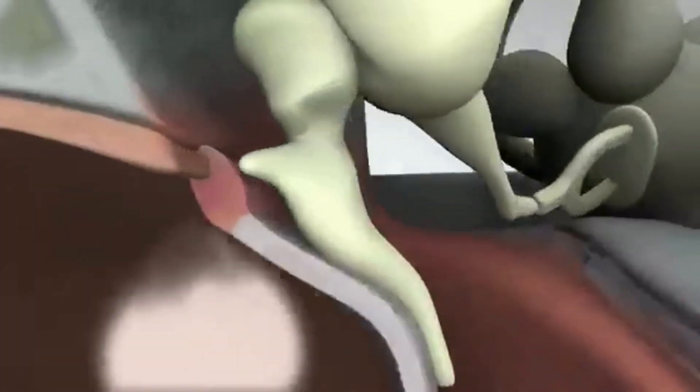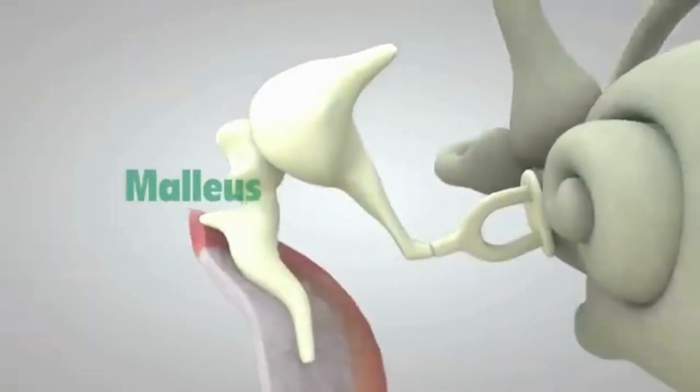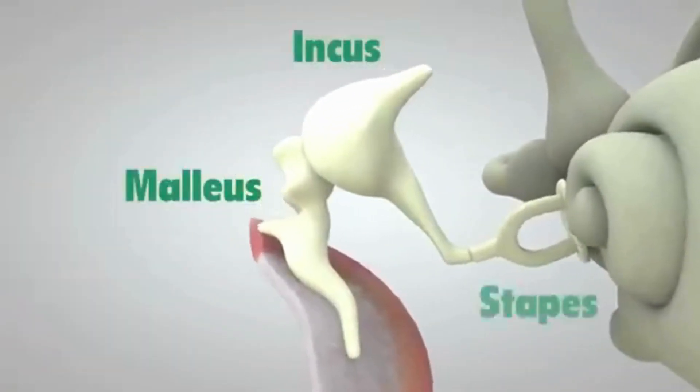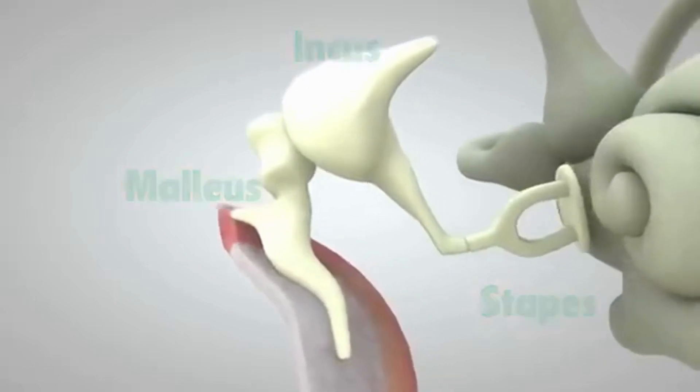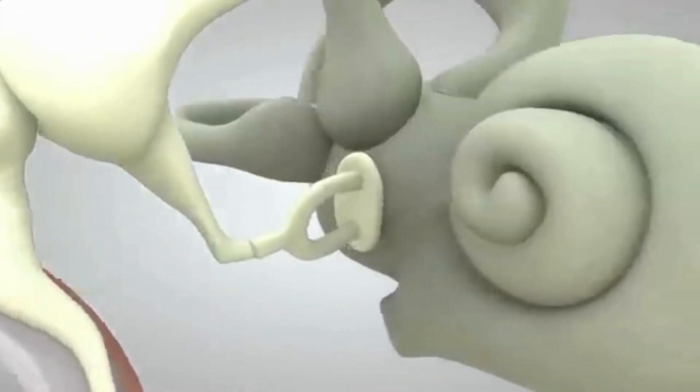which in turn vibrates three tiny bones called the malleus, incus, and stapes. These bones amplify or increase the sound vibrations and send them to the cochlea.